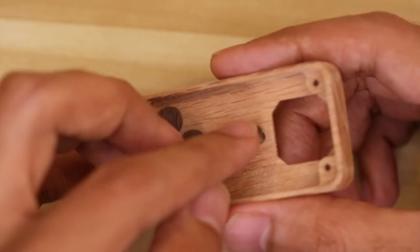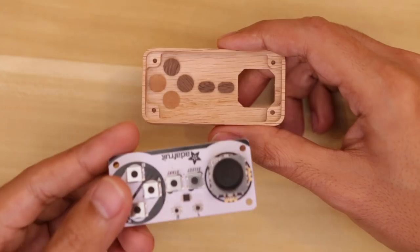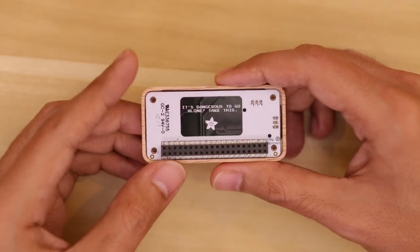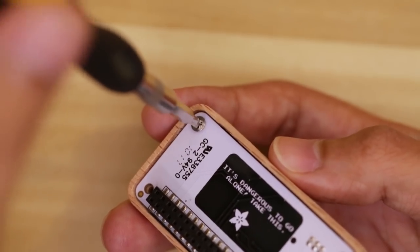Next, I placed all of the wooden buttons into the cutouts on the top of the case. Now we can grab the Joybonnet and install it by laying it face down. Line up the mounting holes with the standoffs and fasten machine screws.